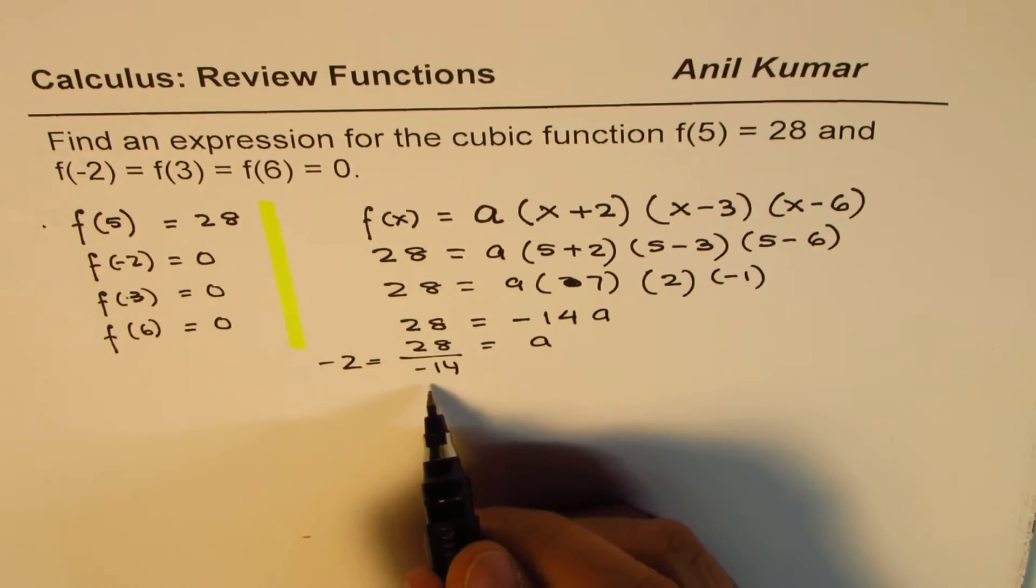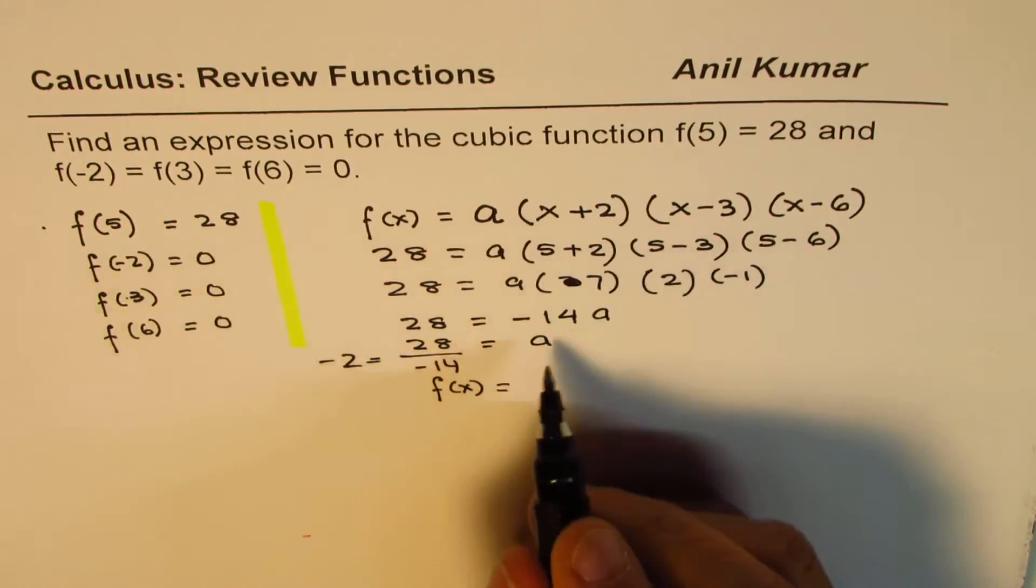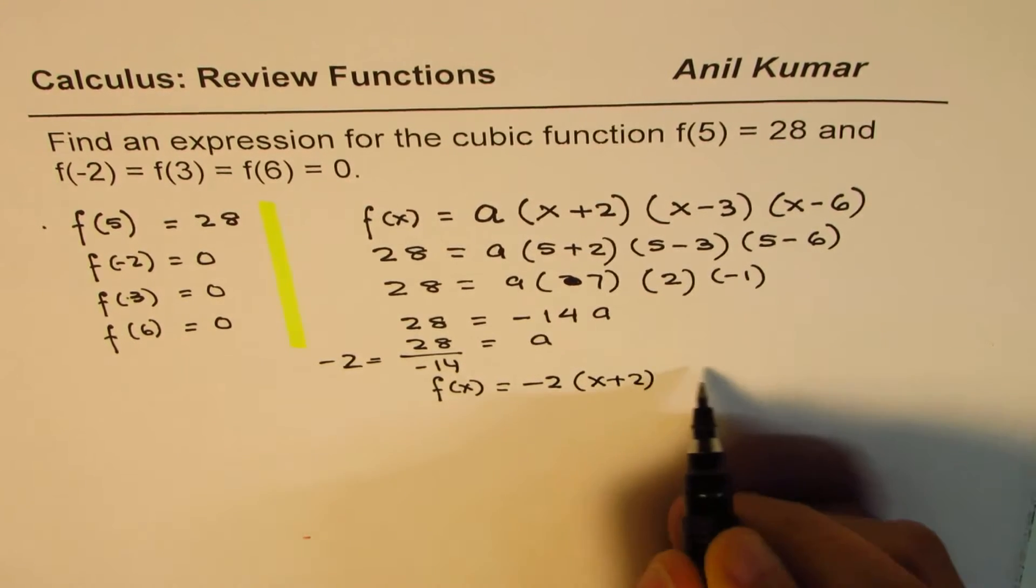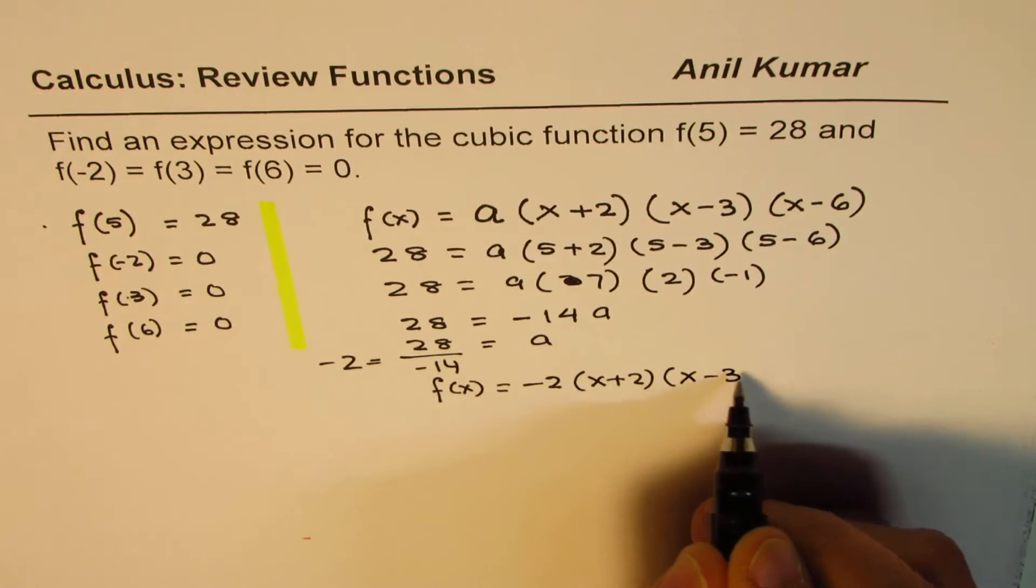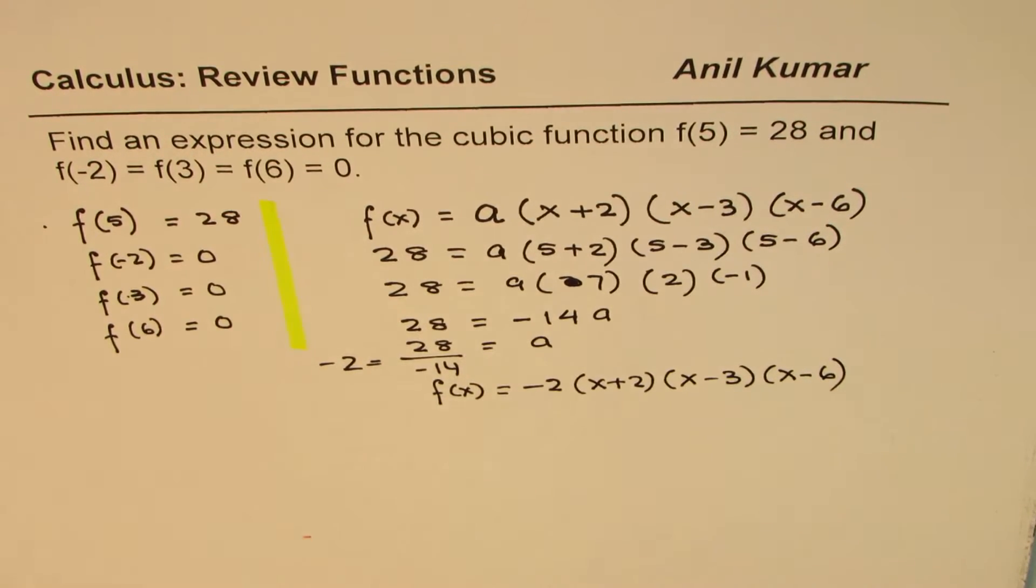So now we can write the function. We say f(x) equals... a is minus 2, so we'll write this as minus 2 times (x+2) times (x-3) times (x-6). So that is the expression for the cubic function which is going to satisfy all the given conditions.